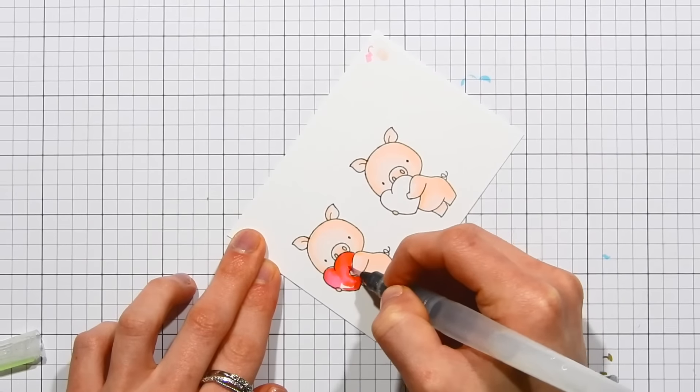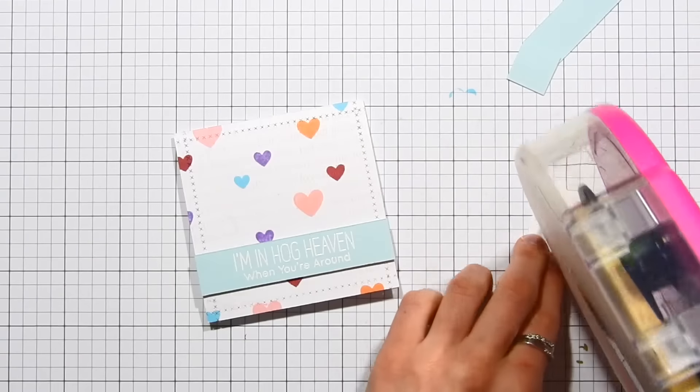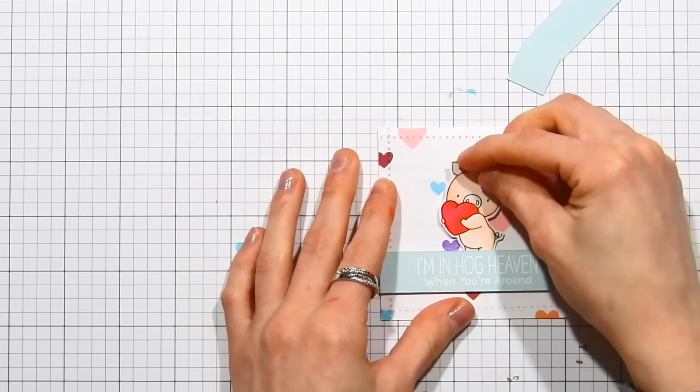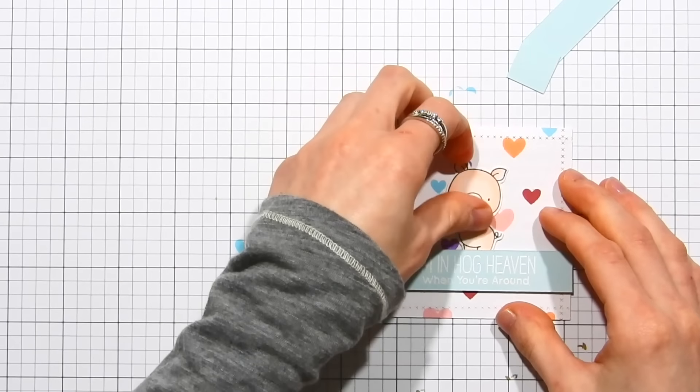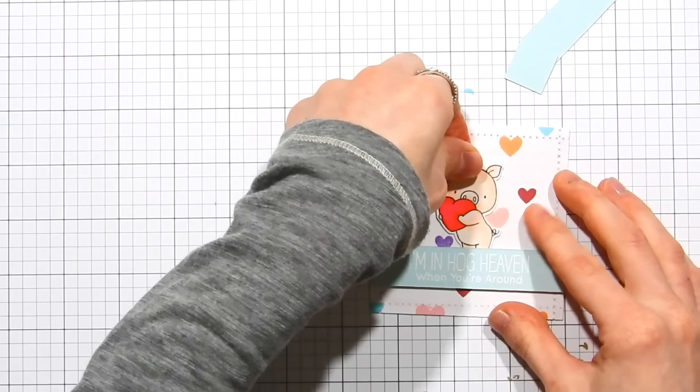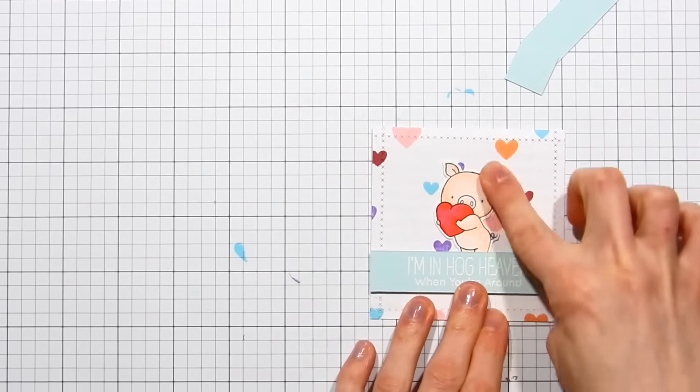I'm going to pop this up onto my card. I added some stitching details using my favorite things border die, and I also heat embossed the Hog Heaven sentiment onto a piece of sea glass cardstock from Simon Says Stamp. I popped that up onto my card and now I'm tucking the pig underneath of that little sentiment banner.